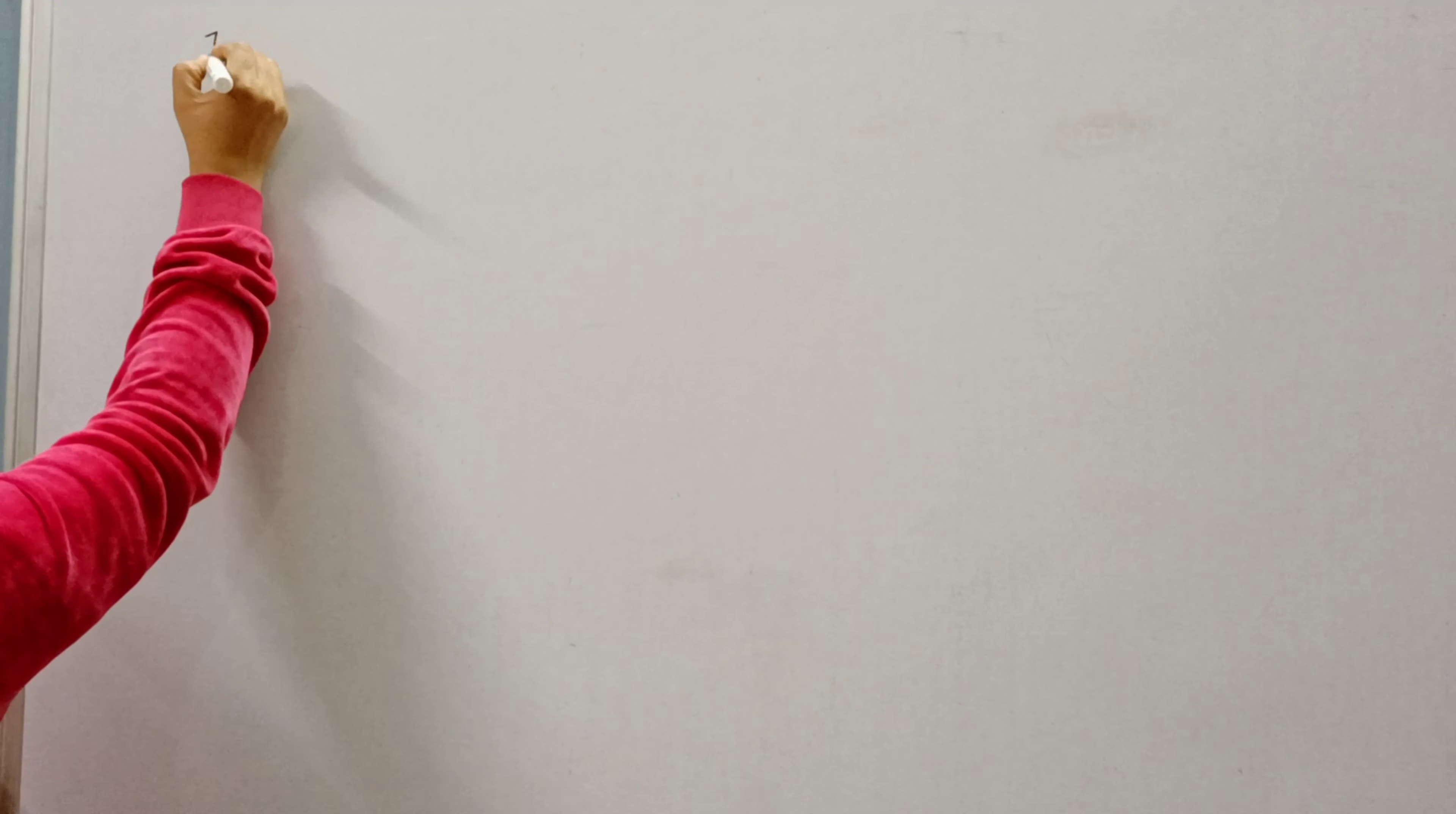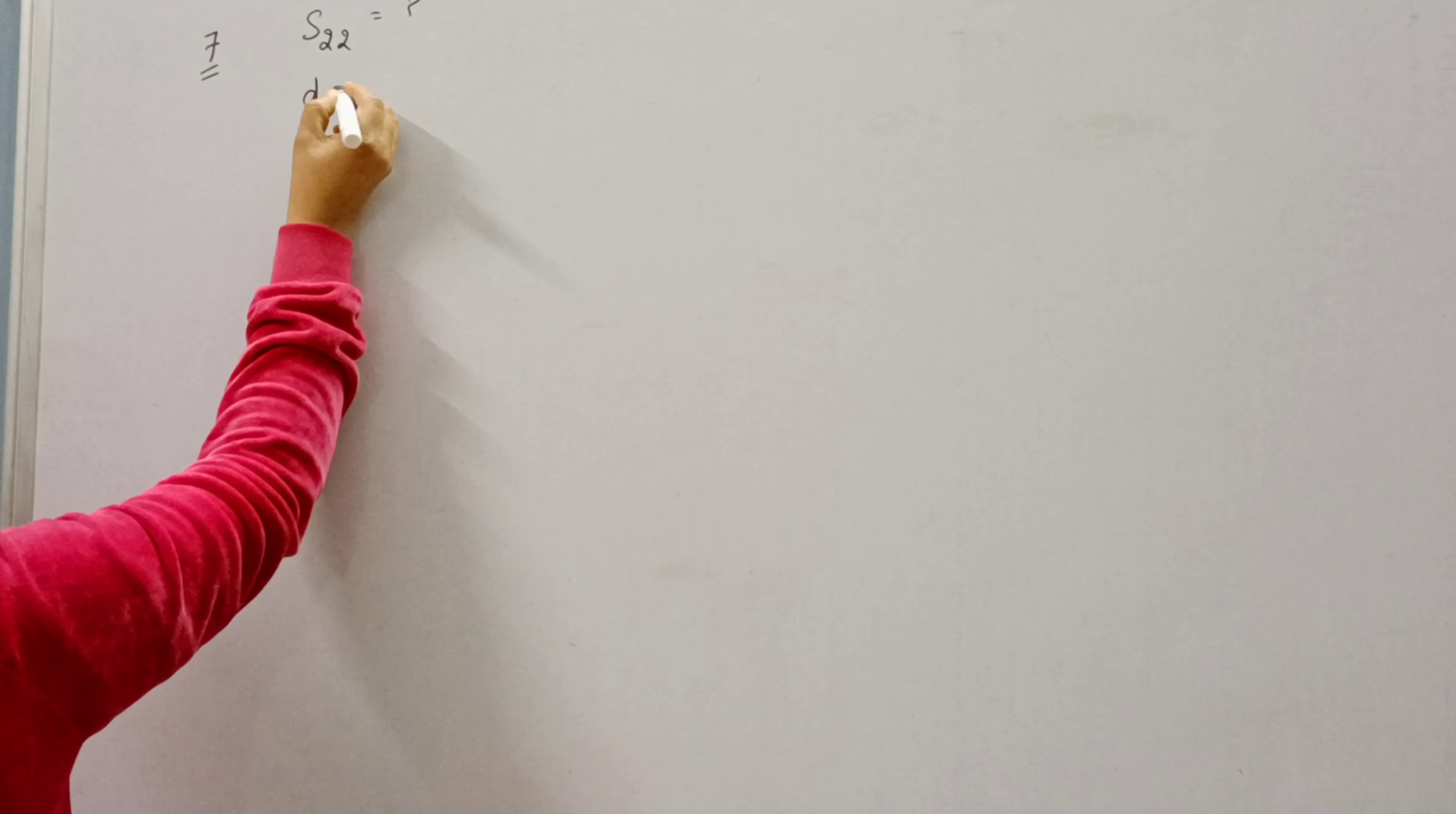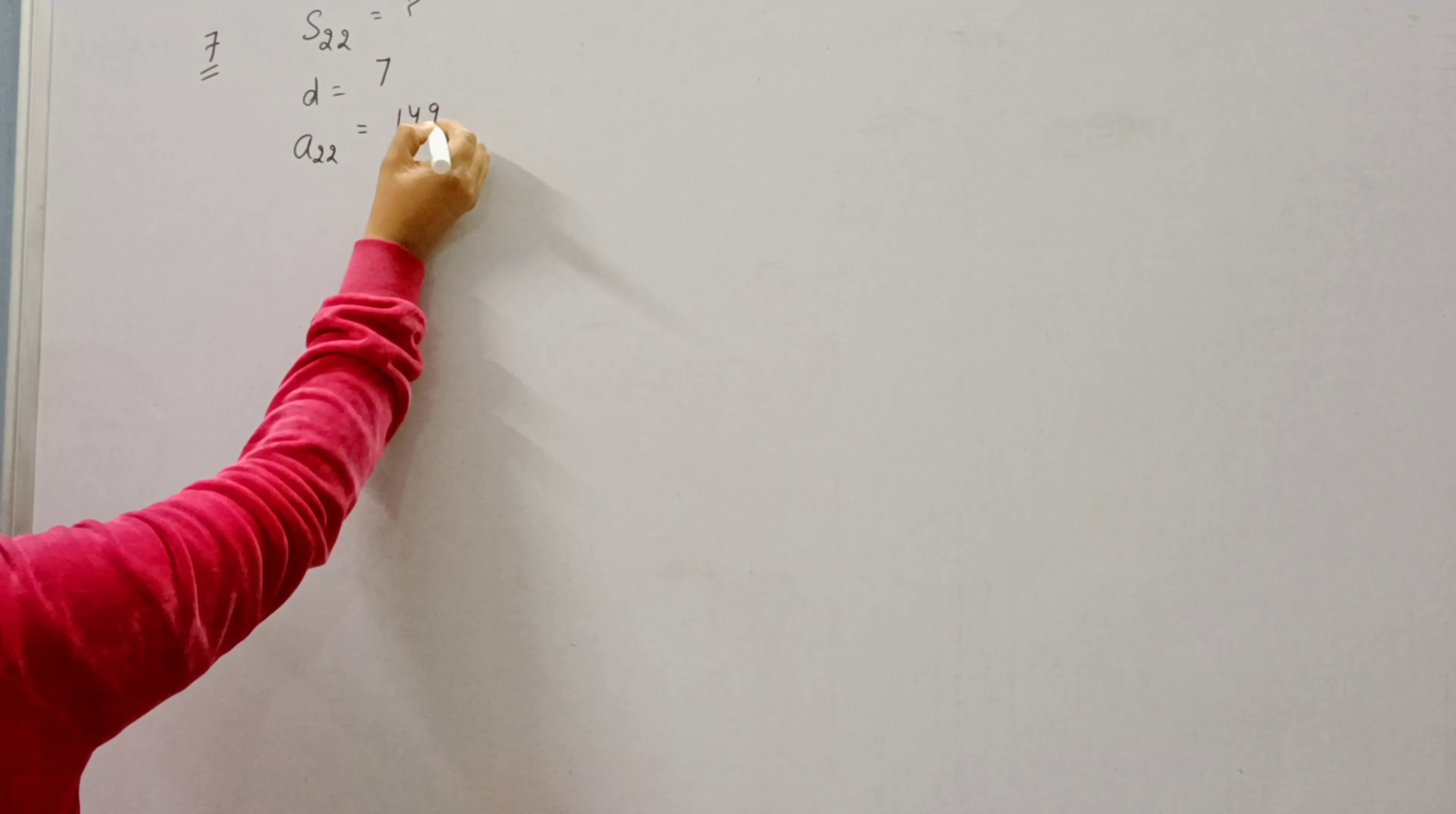Greetings everyone, today we will do question number 7 and 8 of exercise 5.3. Question number 7 is: Find the sum of first 22 terms of an AP in which D is 7 and 22nd term is 149.